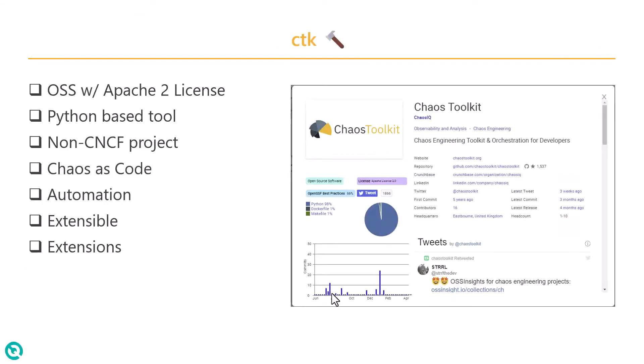Kaya's Toolkit is an open source software which comes with Apache 2 license. It is a Python-based tool and also it is a non-CNCF project. In the CNCF landscape, you can find Kaya's Toolkit under non-CNCF.